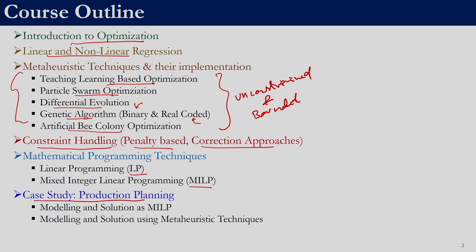Given an optimization problem there are multiple ways to solve it. We should be in a position to select the best possible set of techniques. Then we will be looking at a production planning case study. In this we will take one problem and model it as a MILP, and also model and solve it using meta-heuristic techniques. The reason for doing this is you will be able to understand the strength and weakness of both mathematical programming techniques and meta-heuristic techniques.